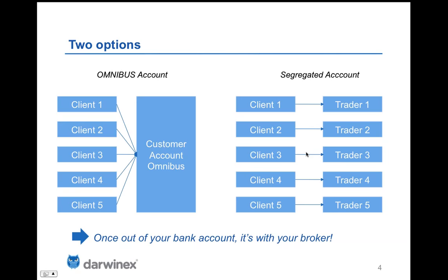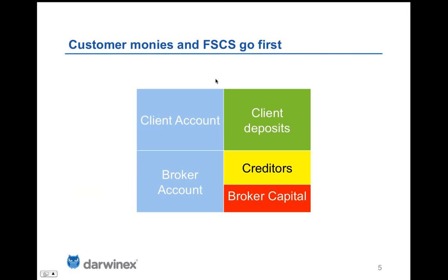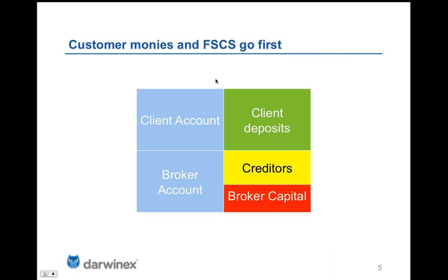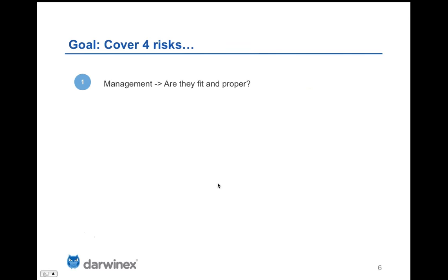What matters of course is that once your money is out of your bank account it is no longer within your control, and you depend on somebody else wiring it back to you — which should be cause for further investigation at the very least. What the segregated account rules mean is that were there to be a bankruptcy — where the company you've wired money to as your broker goes down — whatever client deposits were owed to customers are priority party to any bankruptcy proceeds, meaning you as a customer would get paid first before anybody else.